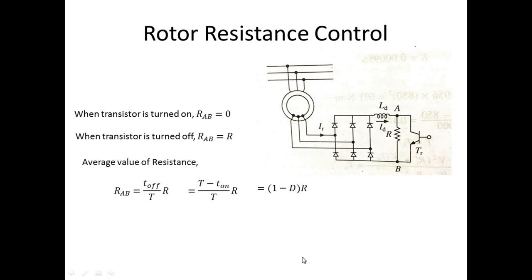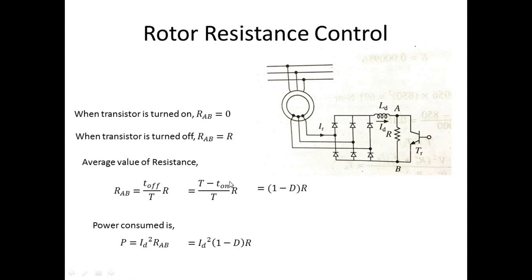There will be power consumption due to this resistance: P = I_D squared × R_AB, where R_AB = (1 − D) × R. This is the disadvantage of rotor resistance control — power is wasted. If duty ratio D is controlled from 0 to 1: when D = 1 (fully on), R_AB = 0; when D = 0, R_AB = R (maximum).